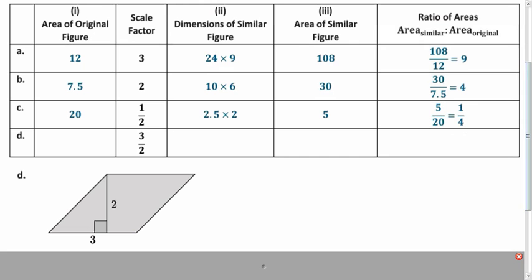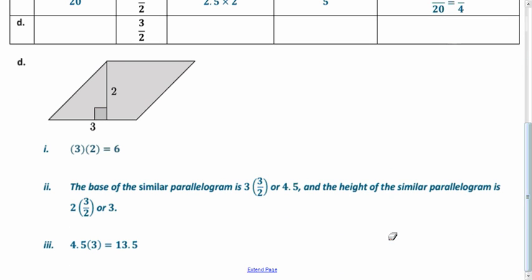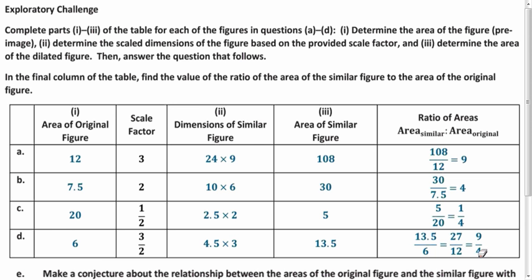And part D, try the same with this parallelogram. Our area is 6, our new dimensions are 4.5 and 3, and the new area is 13.5. That gives us a ratio of 9 fourths.